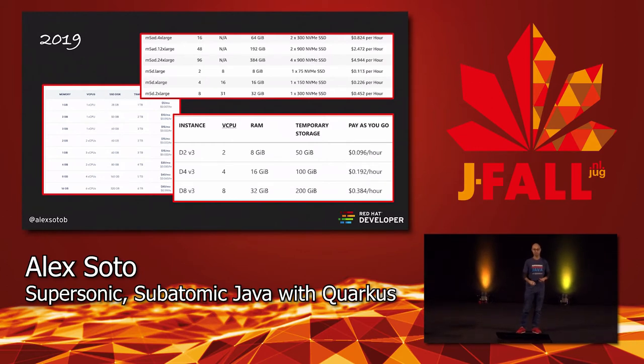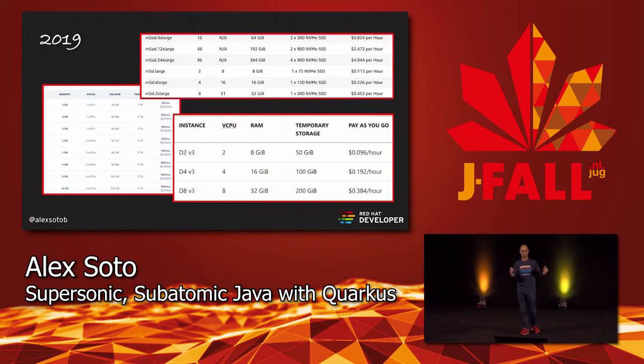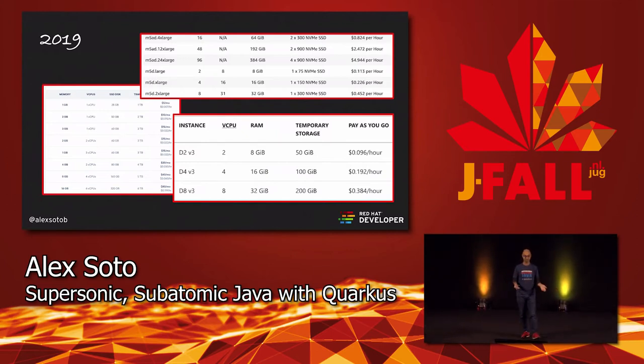This has changed a lot because nowadays we have the cloud. Since we moved to cloud computing, we are not paying anymore for all our hardware on-site. Nowadays you are paying for CPU and memory, so you don't need to spend thousands of dollars on hardware — you just pay as you need.